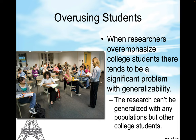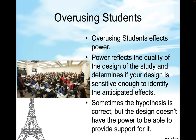So what are we doing? We're doing all this research — especially psychological research — on people that haven't really lived yet. Overusing students affects power. Power reflects the quality of the design of the study and determines if your design is sensitive enough to identify the anticipated effects.